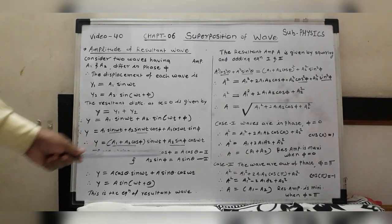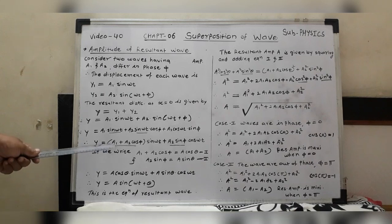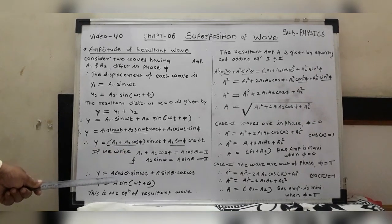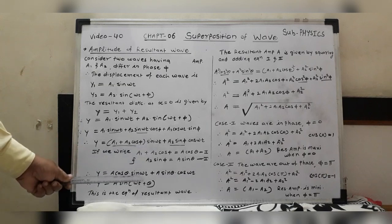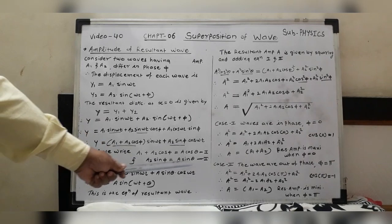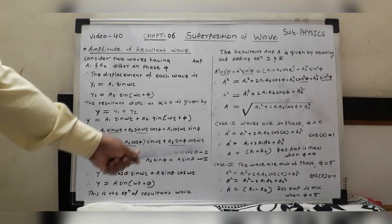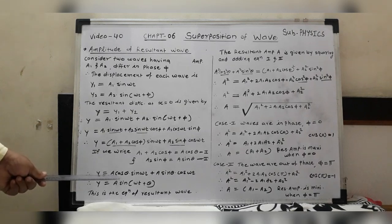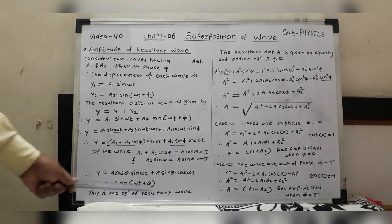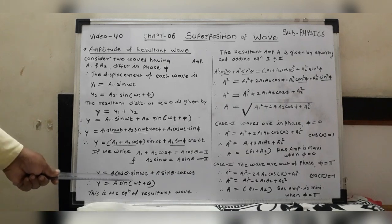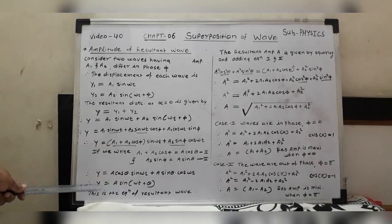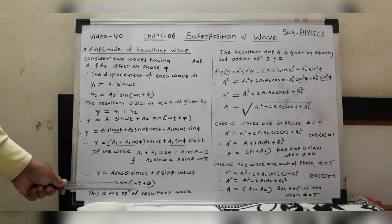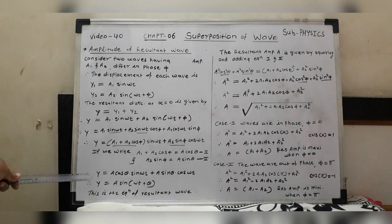Substituting these values: y = A cos θ · sin(ωt) + A sin θ · cos(ωt). Using the trigonometric formula, this gives y = A sin(ωt + θ). This is the equation of the resultant wave, and A is the resultant amplitude.